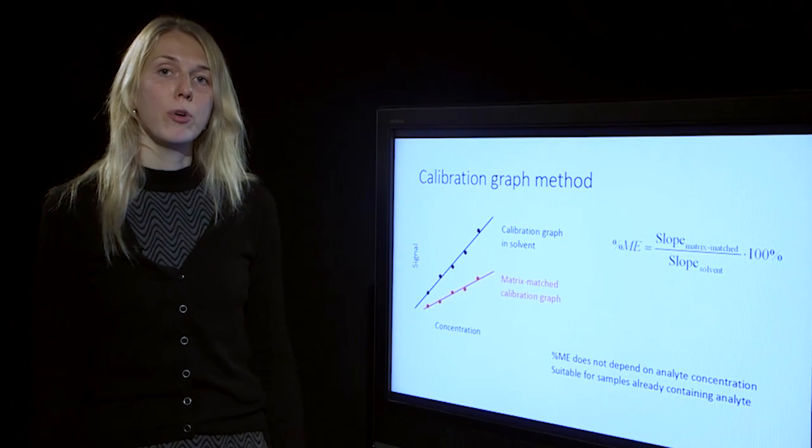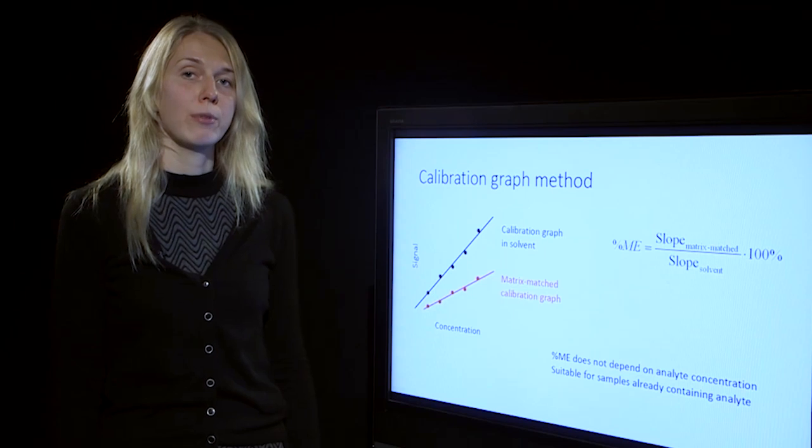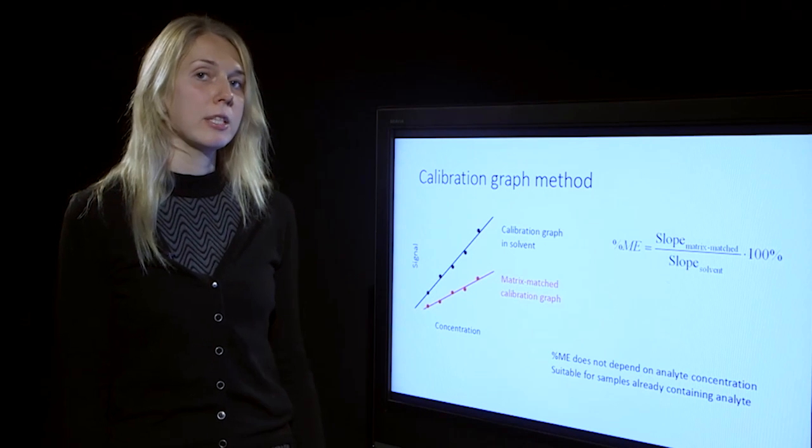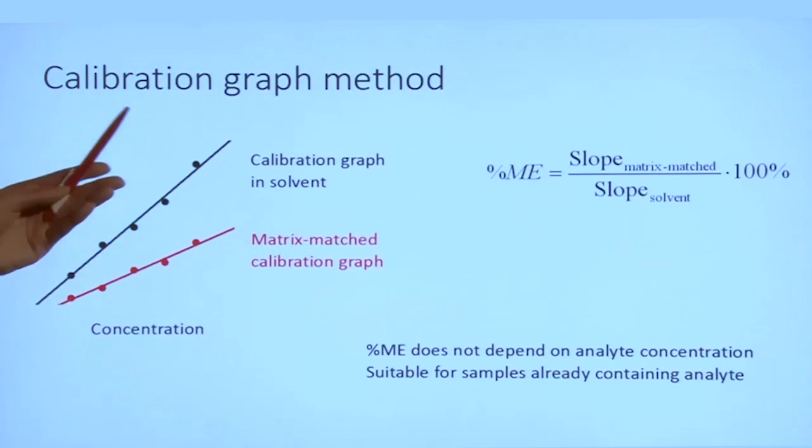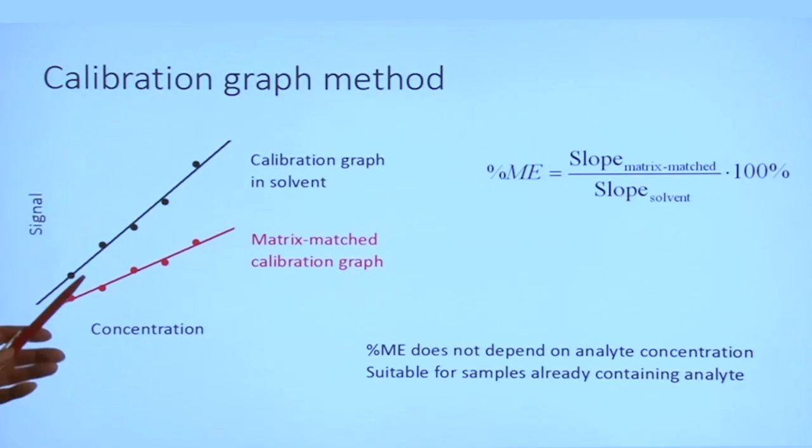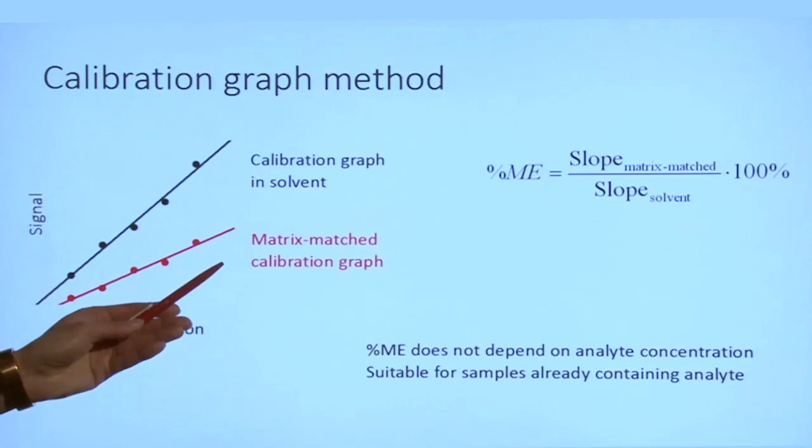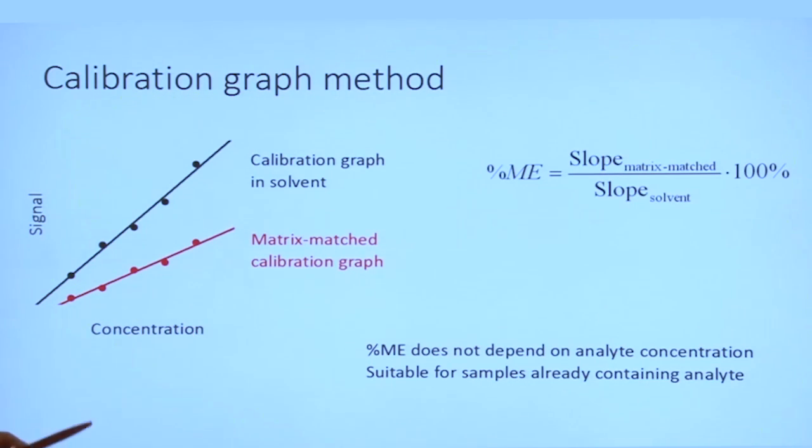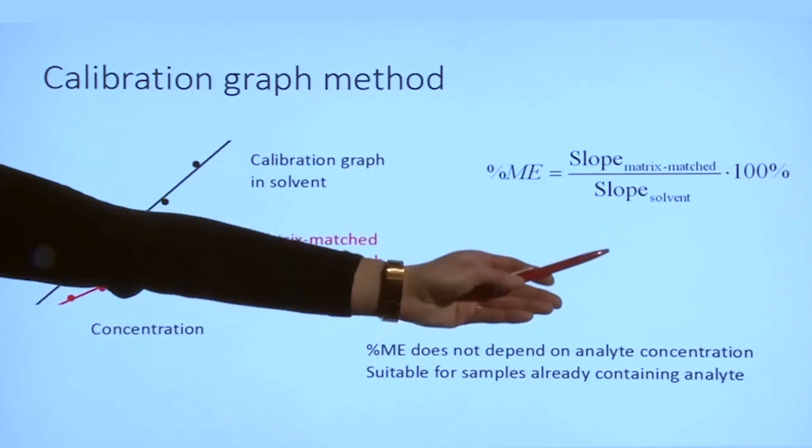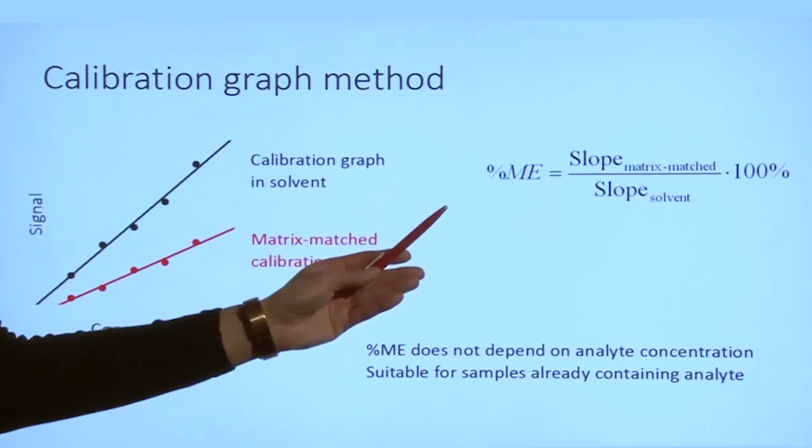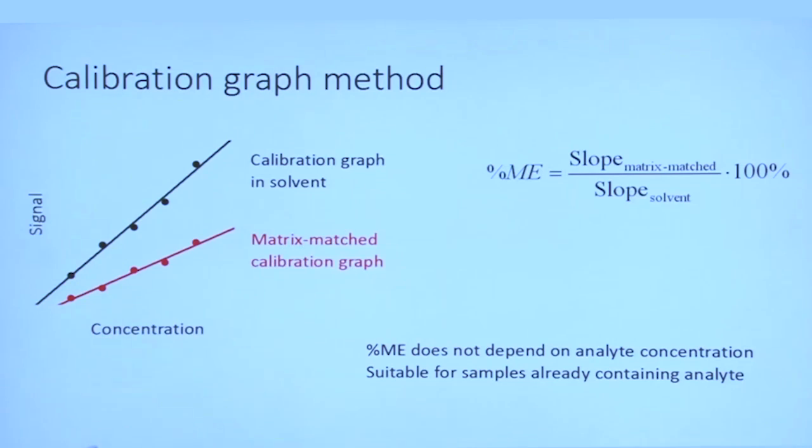The third method uses calibration graph slopes. In this case two calibration graphs are prepared, one in solvent and the other in the extract of the sample, the so-called matrix-matched calibration graph. For both graphs, slopes are calculated and compared and matrix effect is obtained. This method is very useful because it allows to evaluate matrix effect on a wide concentration range.